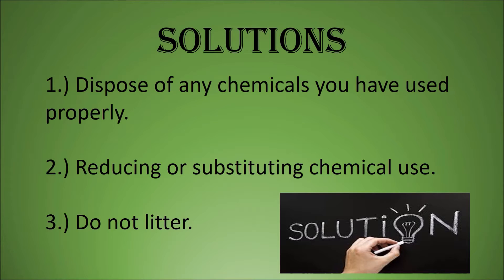The reason people do not already dispose of their chemicals properly is because they are lazy. Another simple way to prevent groundwater pollution is reducing or substituting the use of chemicals. One way you can do this is to buy native plants for your landscape, because they do not need much water or fertilizer. Also, to substitute for cleaning supplies, you can use natural household cleaners such as lemon juice, baking soda, and vinegar.